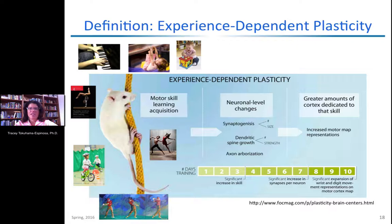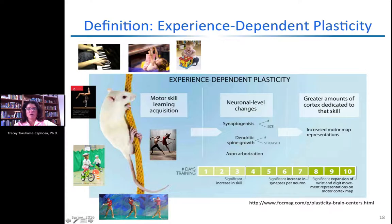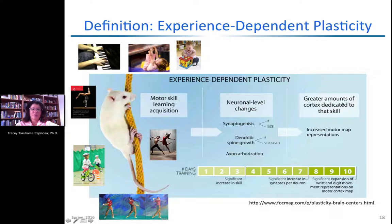Experience-dependent plasticity is another type. The more you practice something, the stronger the connections — and not only that, you can have greater amounts of cortex dedicated to a skill based on the variability of moves you make. If you just learn chopsticks on the piano, you'll have certain pathways. But if you learn to improvise, those are distinct but overlapping pathways, meaning greater real estate in the brain is dedicated to that skill.